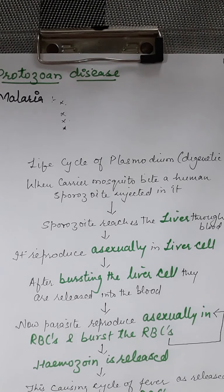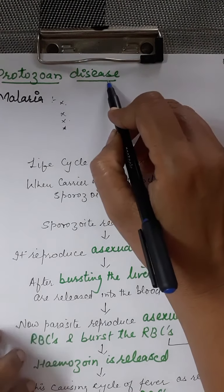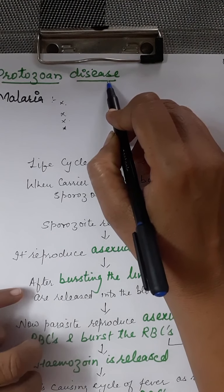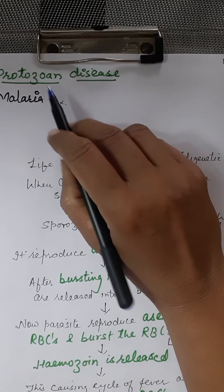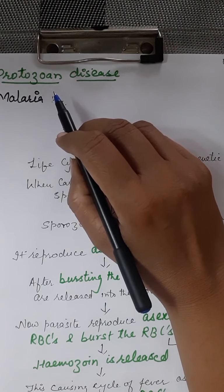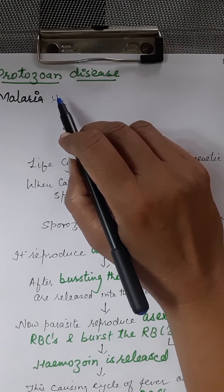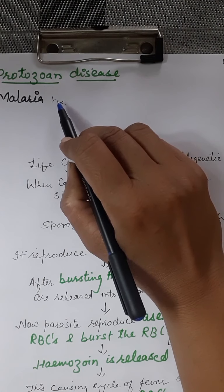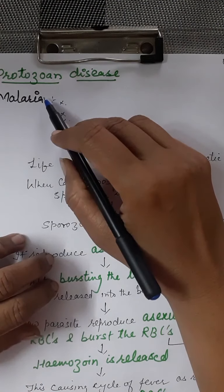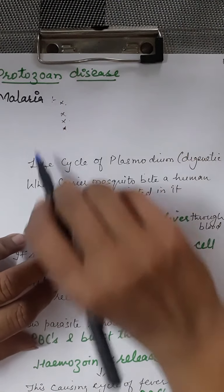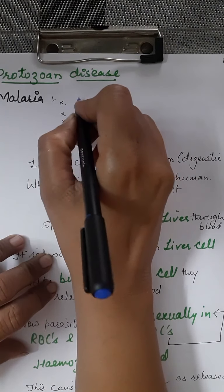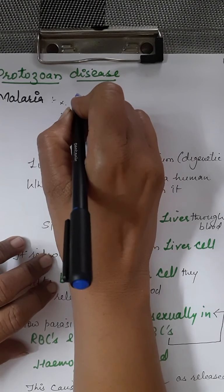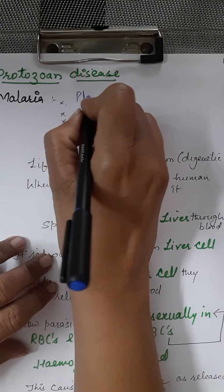In this video, we will talk about protozoan diseases. The most common protozoan disease is malaria. The causative agent of malaria is Plasmodium.